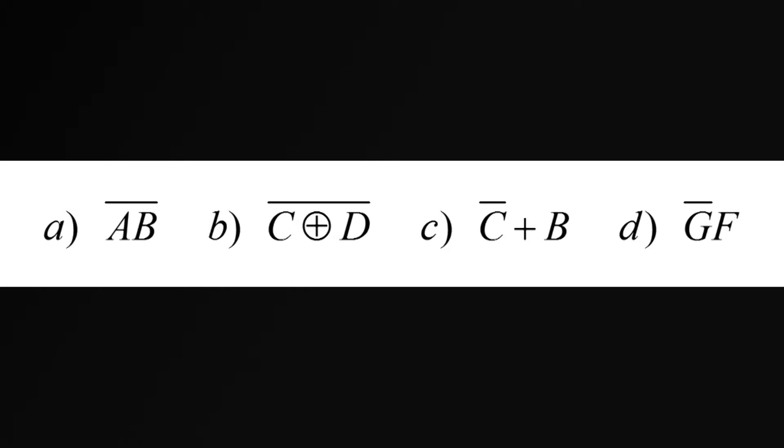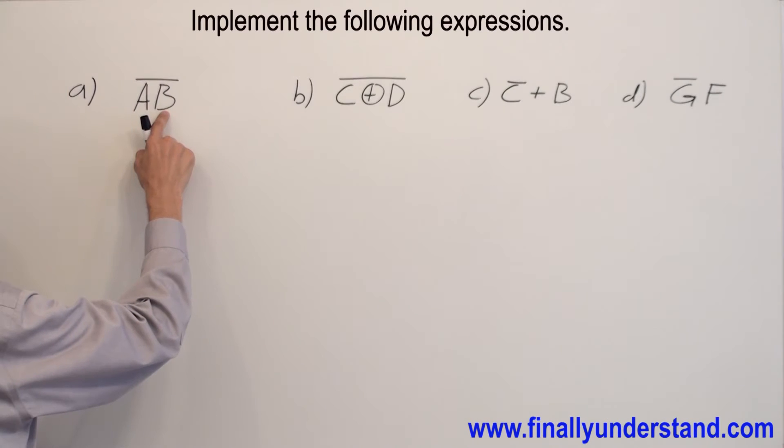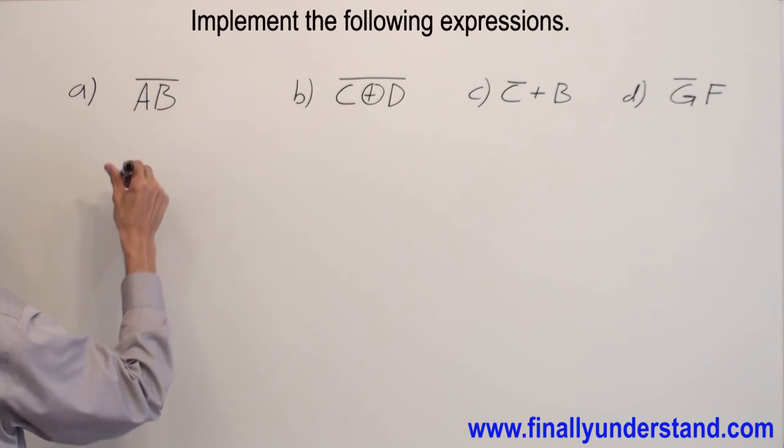Let's implement these functions. This is a NAND gate. We have A and B and bar, so this is a NAND gate.